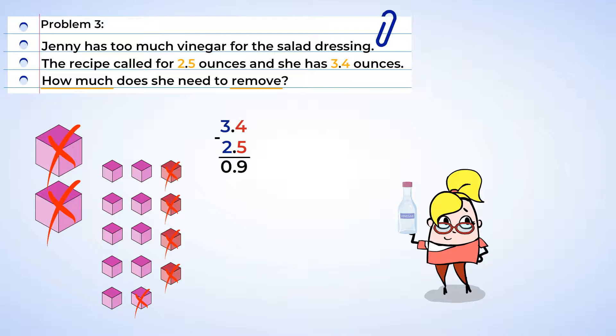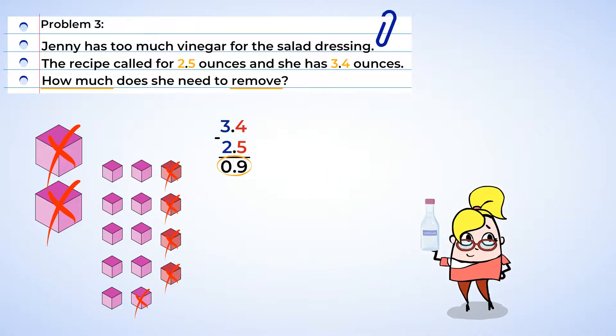And this means that Jenny had an extra 9 tenths and needs to remove 0.9 ounces to have the correct amount of vinegar for the salad dressing. Whew! We saved the salad! But you know, just to be on the safe side, let's check if we subtracted right. And how do we check?